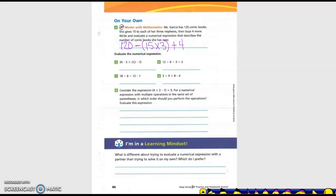Evaluate the numerical expression. So 35 minus 5 times 12 minus 7. So 12 minus 7, are you doing that first? Yes. Why? Because it's in parentheses. So what is that? 5. Then what do I do next? 5 times 5 because that is multiplication. Right? So this would be our next one. So 35 minus 25 equals 10. So 10 is our answer, correct?